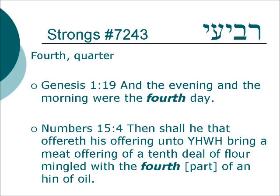Numbers 15:4 — Then shall he that offers his offering unto Yahweh bring a meat offering of a tenth deal of flour mingled with the fourth part of a hin of oil. So it's what we would call a quarter — just like our coin, a quarter is one-fourth of a dollar.